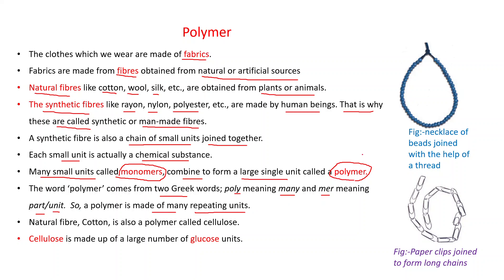You can compare this with a necklace — a necklace is composed of a number of beads joined with the help of a thread. In the same way, when a number of paper clips are joined, we get a long chain. Similarly, when many numbers of smaller units join together, they form a polymer.